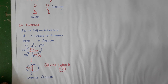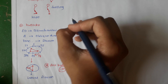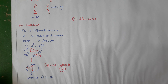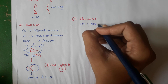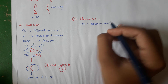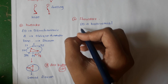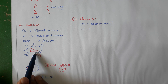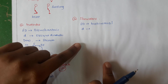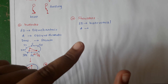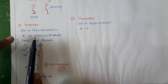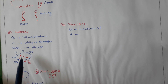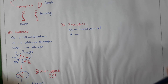Once the buttock has delivered, descent continues and the second set of movements occurs at the shoulders. The engaging diameter for the shoulders is the bisacromial diameter — that is, the diameter between the two acromial processes. This bisacromial diameter will occupy the same oblique diameter that the buttocks had engaged, because the shoulders lie in the same plane. So if it is a right sacro-anterior position, the shoulders will also occupy the right oblique diameter.